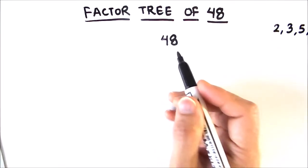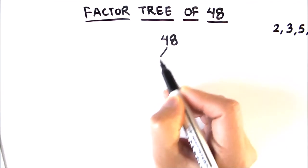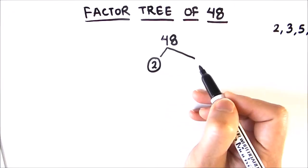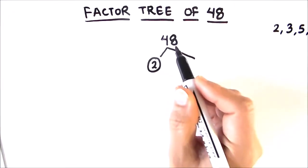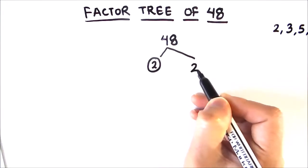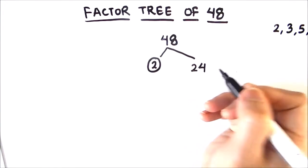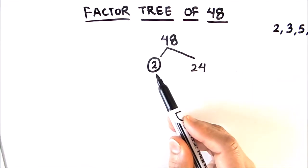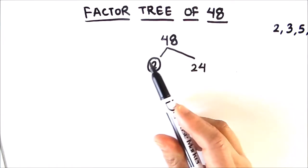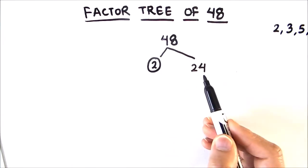For 48, as it is an even number, it can be broken down into two factors which are 2 and 24 — found by dividing 48 by 2, since 2 times 24 is 48. Now, as 2 is not further divisible by any number, it is a prime number, so we are going to circle it and our path stops here. Next is 24.